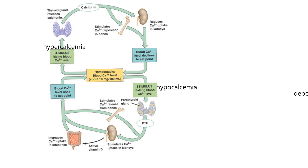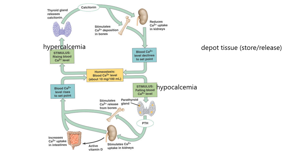Let's look at hypocalcemia — that means we need to get calcium back up. Parathyroid hormone is released by the parathyroid glands. It stimulates bone to release calcium. By the way, bone is a depot tissue for calcium — a depot tissue is something that can store a molecule and then release it back to the body. So bone circulates calcium in and out. Parathyroid hormone also goes to the kidney and stimulates calcium reuptake or reabsorption.